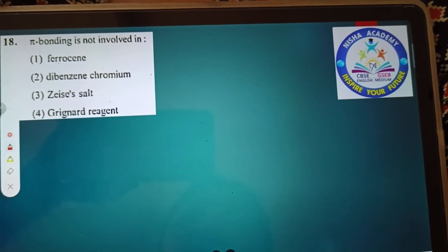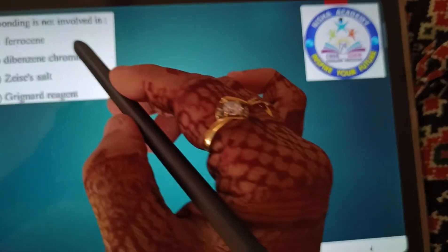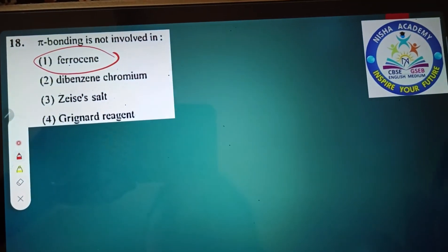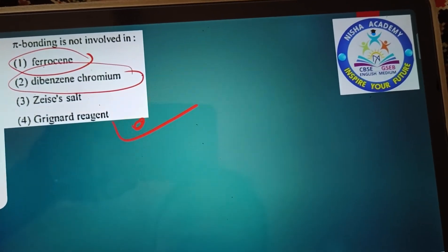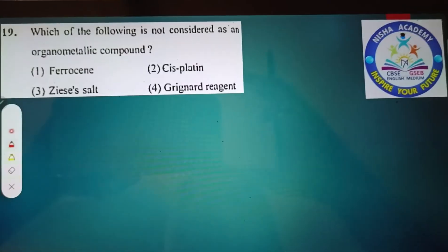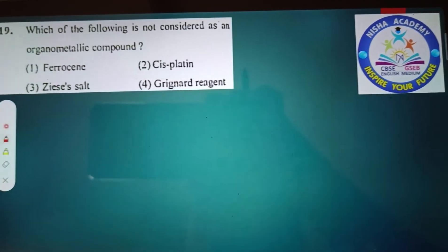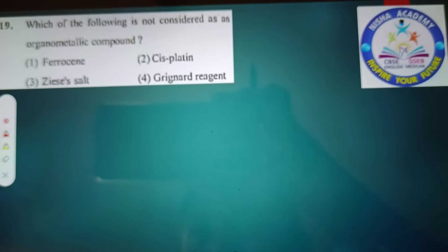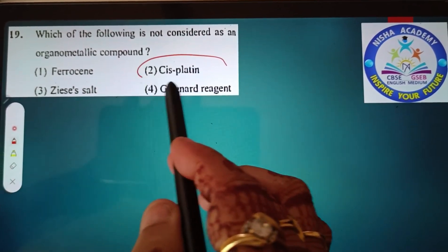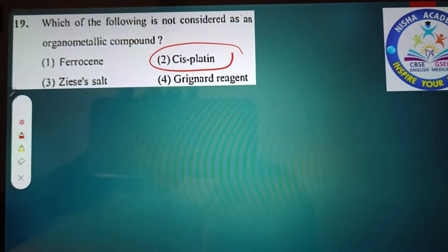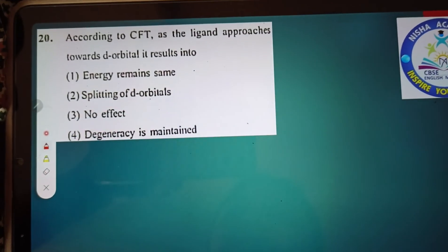Pi bonding is involved in - this was taught. Not involved, sorry. Ferrocene, Grignard reagent. Which of the following is not considered as an organometallic compound? Cisplatin is a cancer medicine. Which is not organometallic? Okay, next question 20.